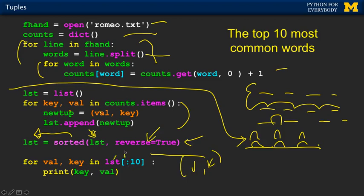So we're saying start at the first one and go up to but not including 10 — that's zero through nine, which is the first ten. And you'll notice that val and key are flipped, because value is the first piece of each tuple and key is the second piece. So it's going to go through successively value-key, value-key, but it's only going to go through the first ten because we've limited this with list slicing.